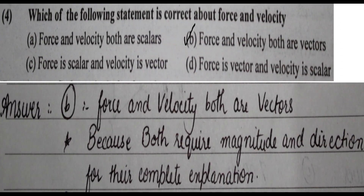The calculated torque gives a final answer of 4 N·m, so option D is correct. The next question asks which statement is correct about force and velocity. The answer is option B: force and velocity are both vectors, meaning they have both magnitude and direction.